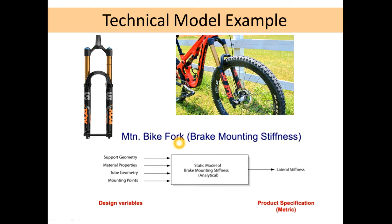For example, we are planning to design a bike fork brake mounting stiffness. We develop an analytical model where the main product specification is stiffness. This stiffness depends on different parameters: support geometry, material properties, tube geometry, and mounting points. We vary these parameters and check the output. This is what we call developing a technical model of the product.